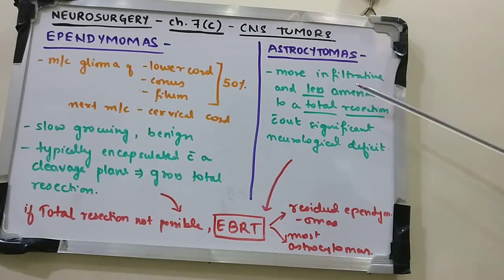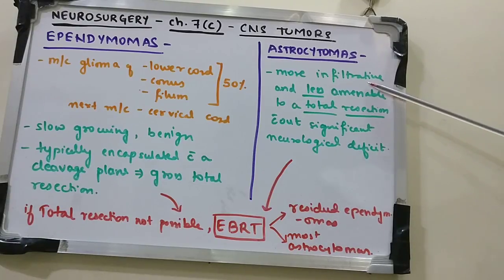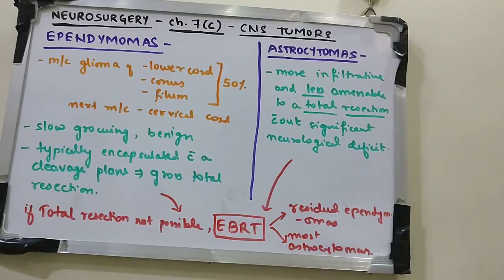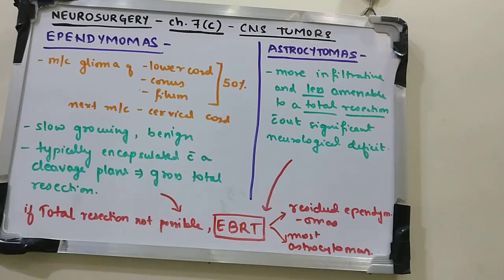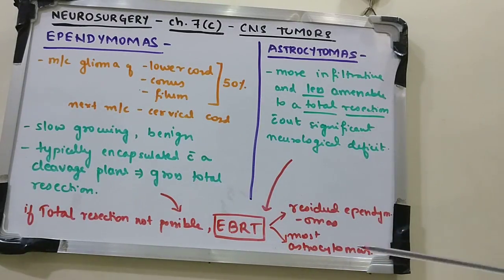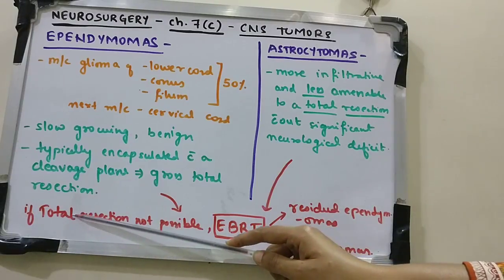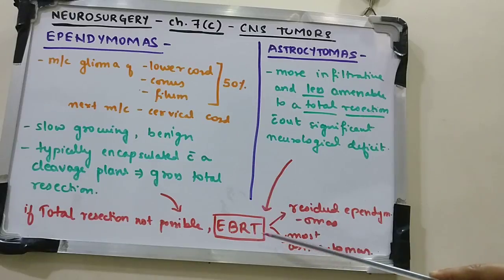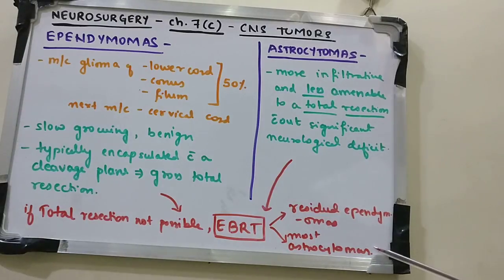Astrocytomas, conversely, tend to be more infiltrative and less amenable to total resection without significant neurological deficit, so surgeons prefer partial removal to avoid damaging the spinal cord. Since total resection is usually not possible for astrocytomas, EBRT (radiotherapy) is used for residual ependymomas and most astrocytomas.